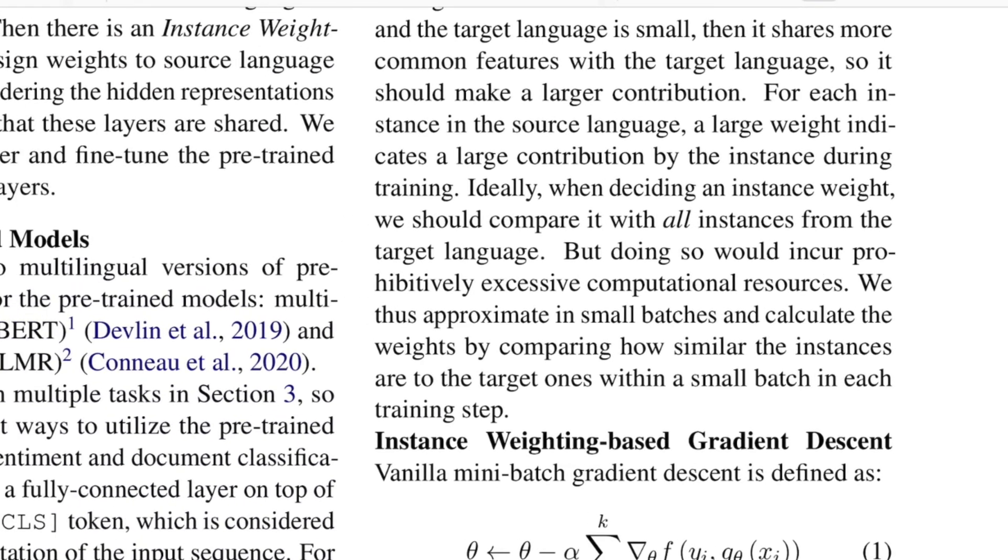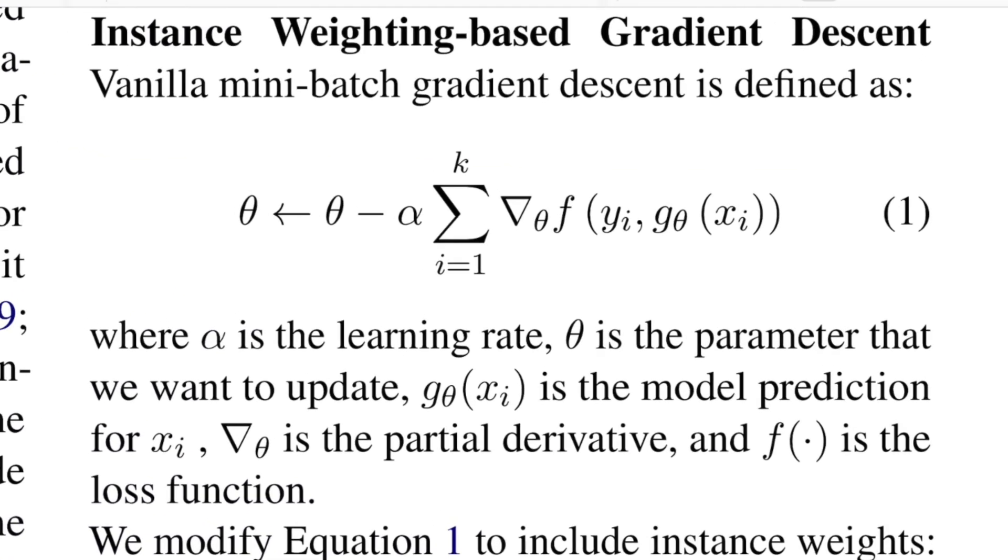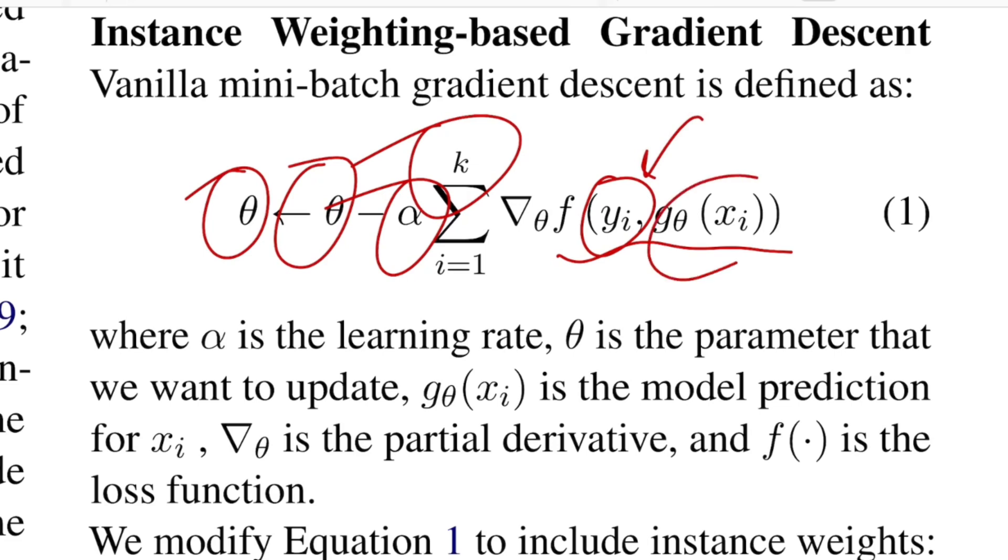This is exactly what they have written over here. If you see the gradient descent equation, we know theta is a parameter that we want to train and update, eta is the learning rate, k is the batch size, f is the loss function, this is the actual label, and g_theta(xi) is the prediction that our model makes for the input sample xi. This is the partial derivative of this loss that we take with respect to the parameter theta. This is a typical equation that everybody knows, but with instance weighting we talked about having an extra term which is w that happens to be with every k.